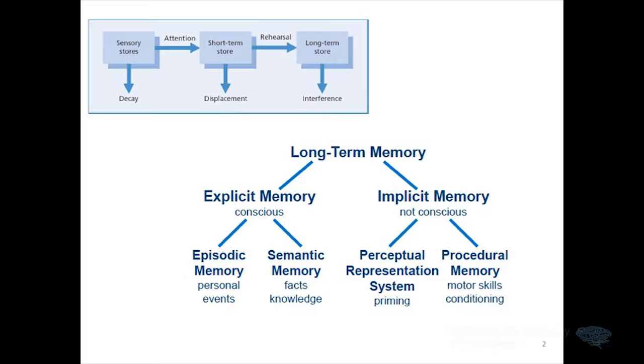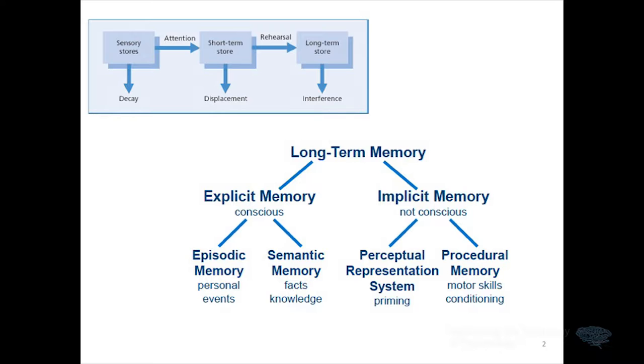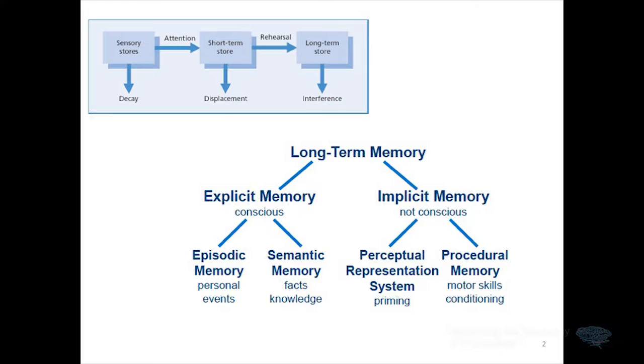We can take long-term memory and divide it up into different components. Long-term memory can be divided into explicit or declarative memory — essentially memory that's accessible to our conscious awareness — versus implicit or non-declarative memory. Examples of explicit or declarative memory are episodic memory, our personal autobiographical memory for things that have happened to us in our lives. The other form is semantic memory: facts, knowledge, things we can learn from a book. Implicit memory — unconscious memory — includes the perceptual representation system, things like priming, where a subliminal stimulus can affect subsequent performance, and procedural memory: motor skills, conditioning, learning how to ride a bike.